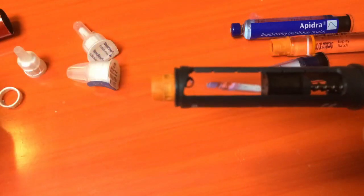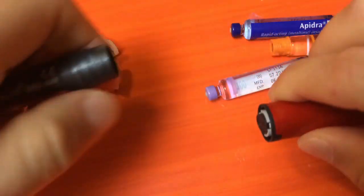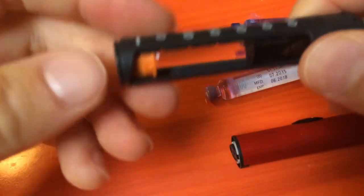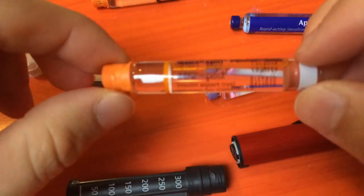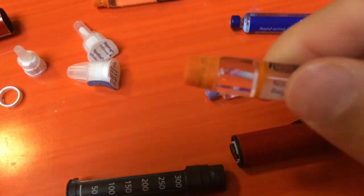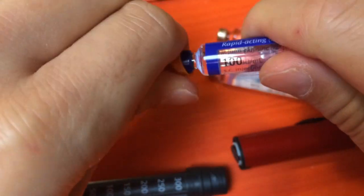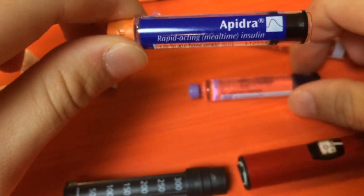The solution I came up with: first step, take off the orange cap from the NovoRapid pen fill by pulling it off. There we go. Then you push it onto the Apidra or Lantus vial, whichever you're going to be using your pen for.